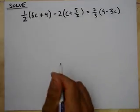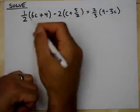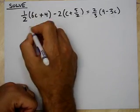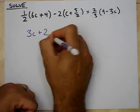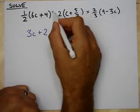Alright. Now, I'm going to solve some equations using this stuff, right? Let's see. I'm going to distribute a half through. Half of 6 is 3, right? 3c plus 2, right? Now, let's distribute this negative 2 through.